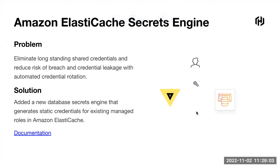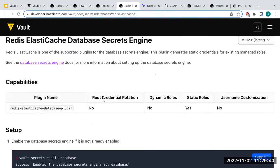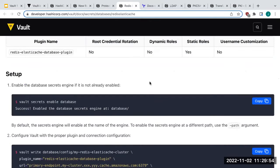In addition to the Redis secret engine, we also added the Amazon ElastiCache secret engine. It addresses the same use case of longstanding credentials. This secret engine can generate static credentials for an existing managed ElastiCache instance. Note that root credential rotation and dynamic credentials are not available in this initial version — it supports static roles only. The docs walk you through how to set it up.